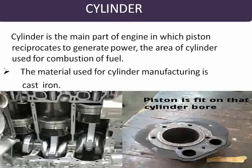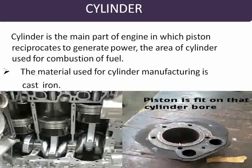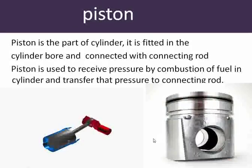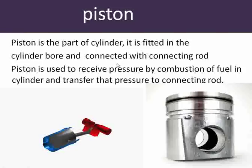There is the cylinder, the piston, and the connecting rod. The piston reciprocates in that cylinder part. Here you see the cylinder board — the piston is fitted on that cylinder board. That is the cylinder board of our Enfield bike. The piston is fitted exactly on that cylinder board. Next, our part is the piston. Piston is a part of the cylinder — it is fitted in the cylinder board and connected with the connecting rod.